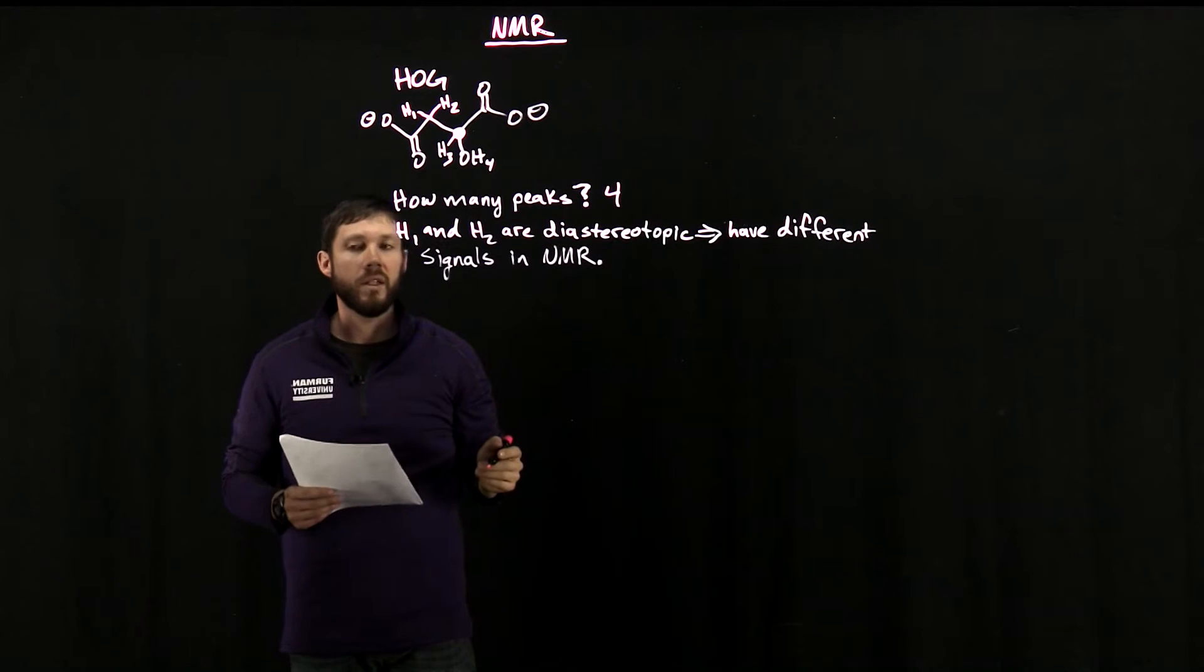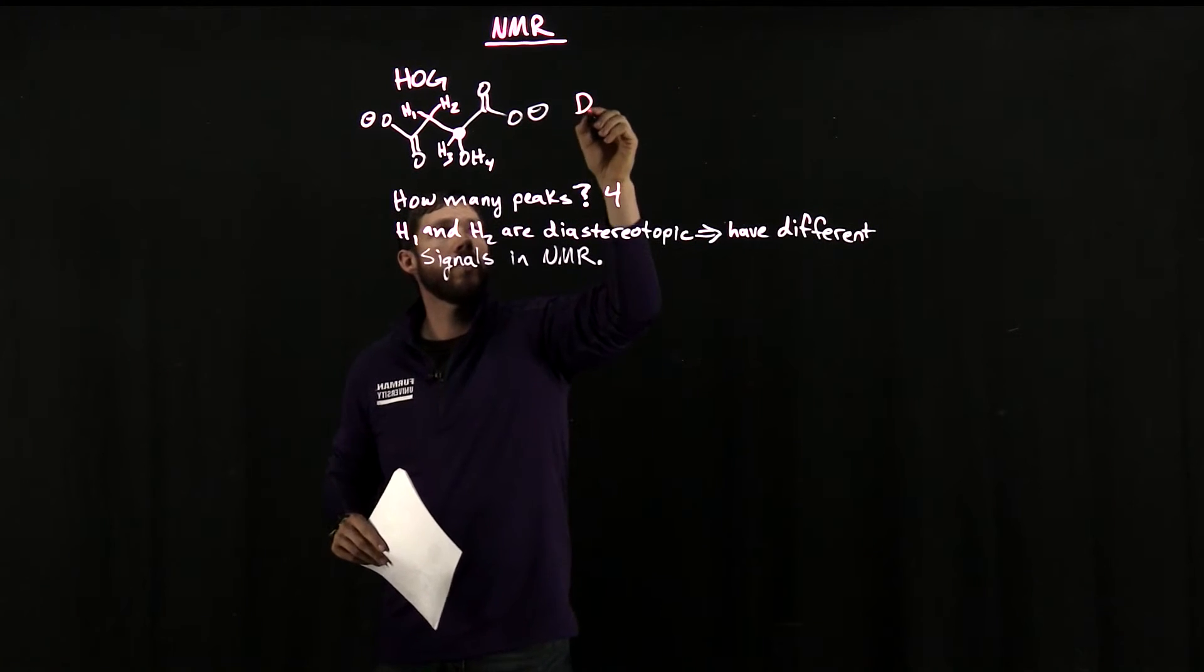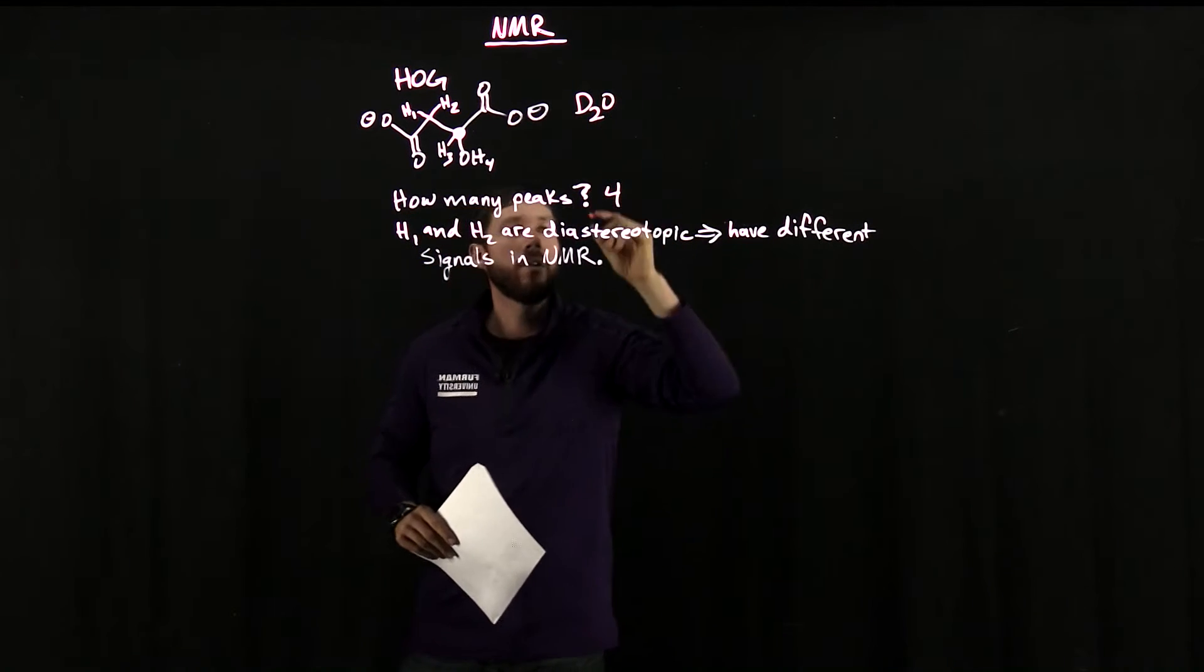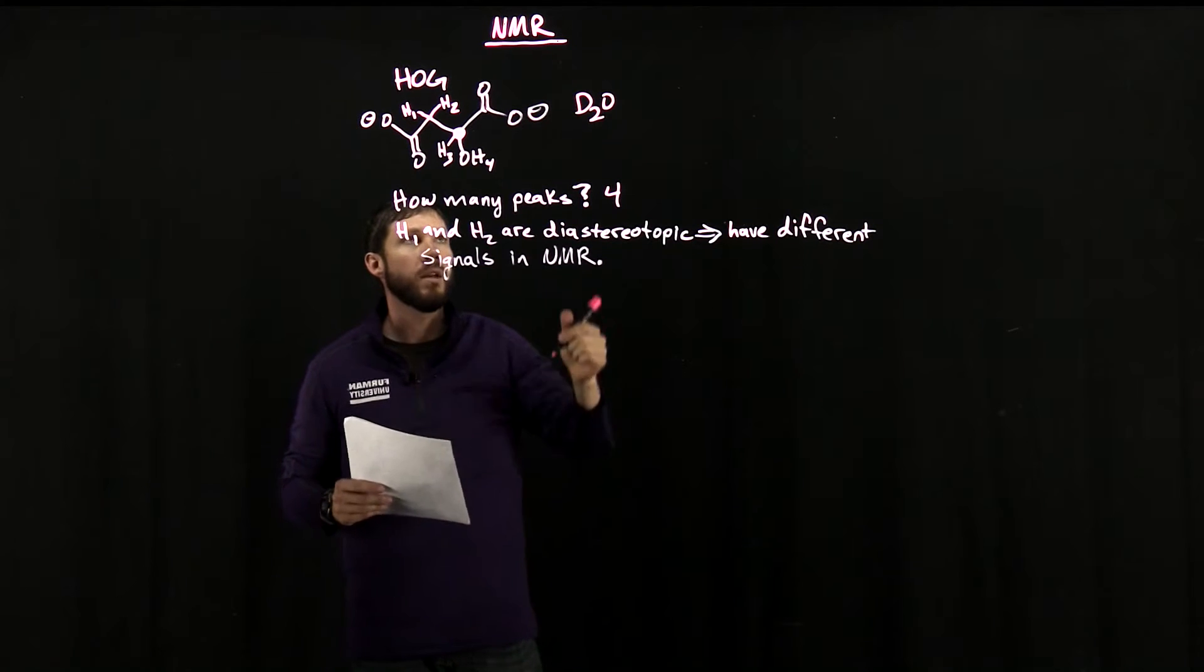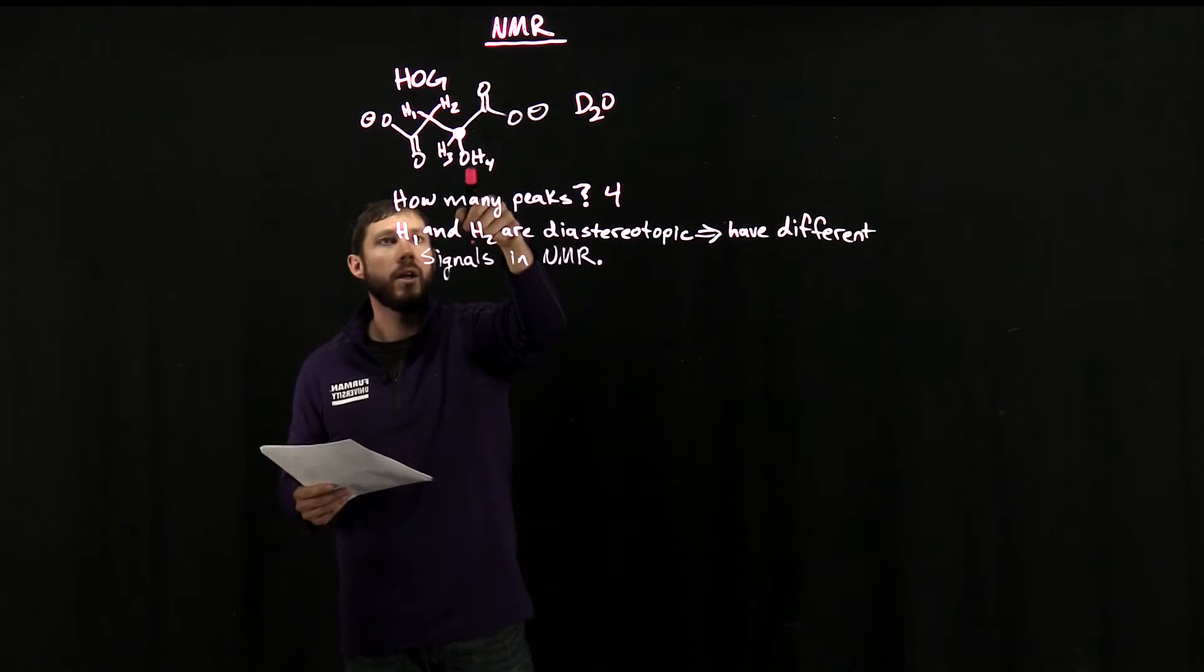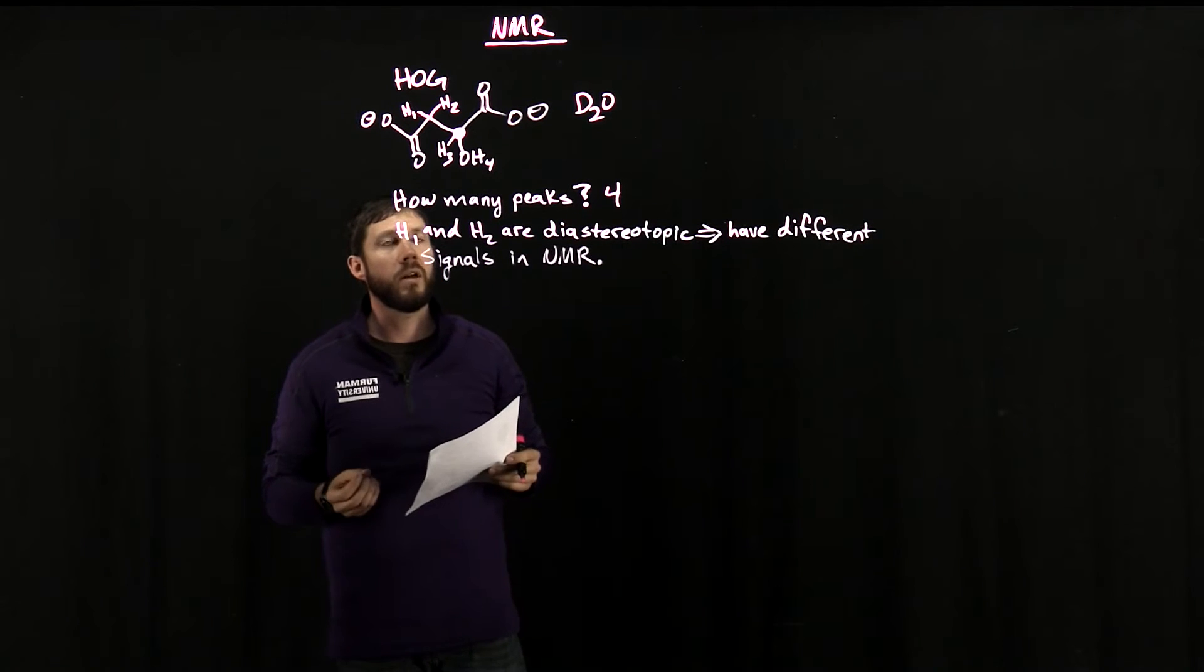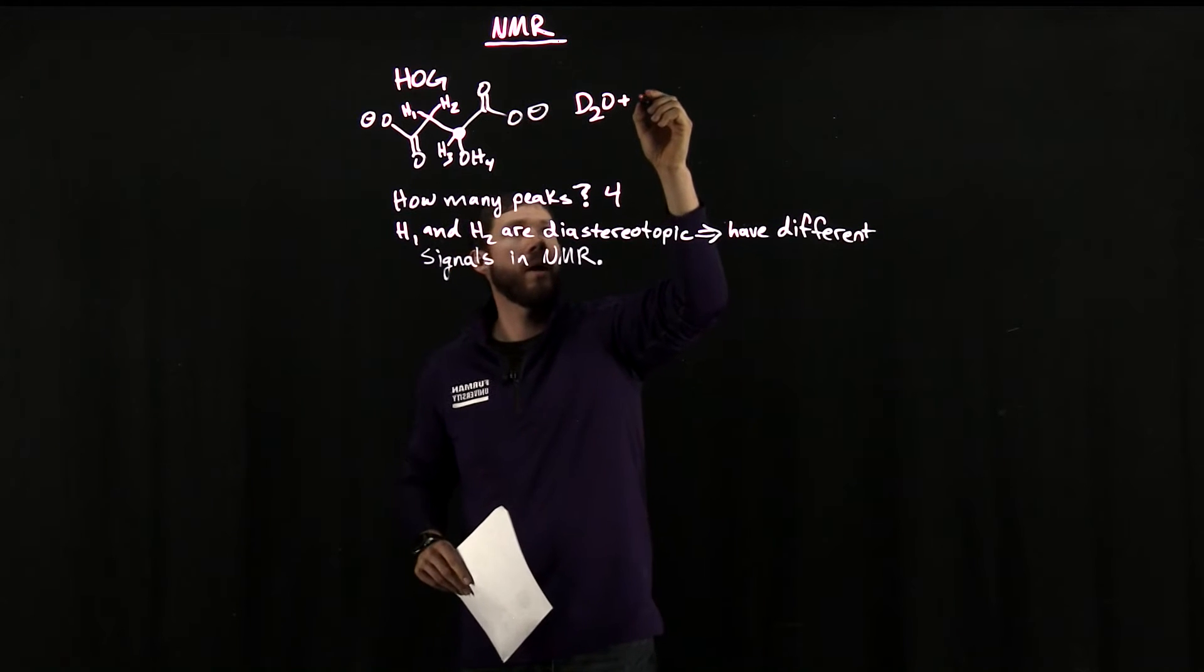But one thing we need to consider is what the solvent was when we ran this NMR. So for this, we use D2O, deuterium oxide, which is just water that has its hydrogens replaced with deuterium. And this is a slightly acidic molecule, and this hydroxyl group, or the alcohol group in your product molecule is also slightly acidic.